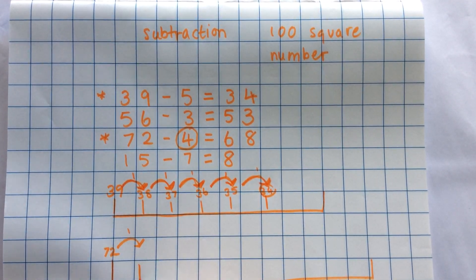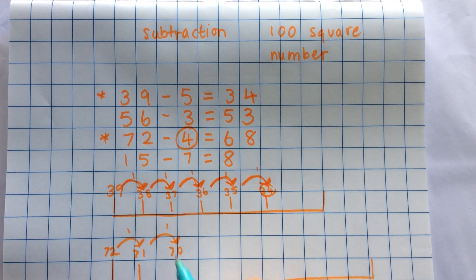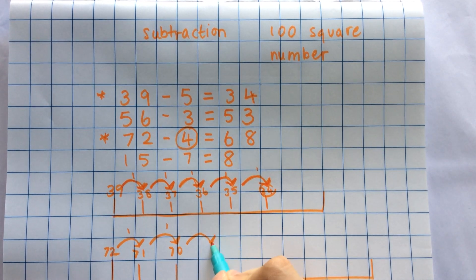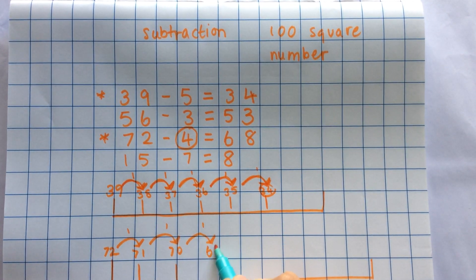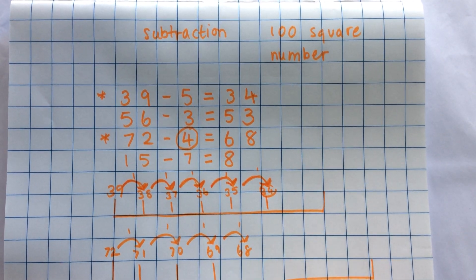1 jump, 71. 2 jumps, 70. 3 jumps, 69. 4 jumps, 68.